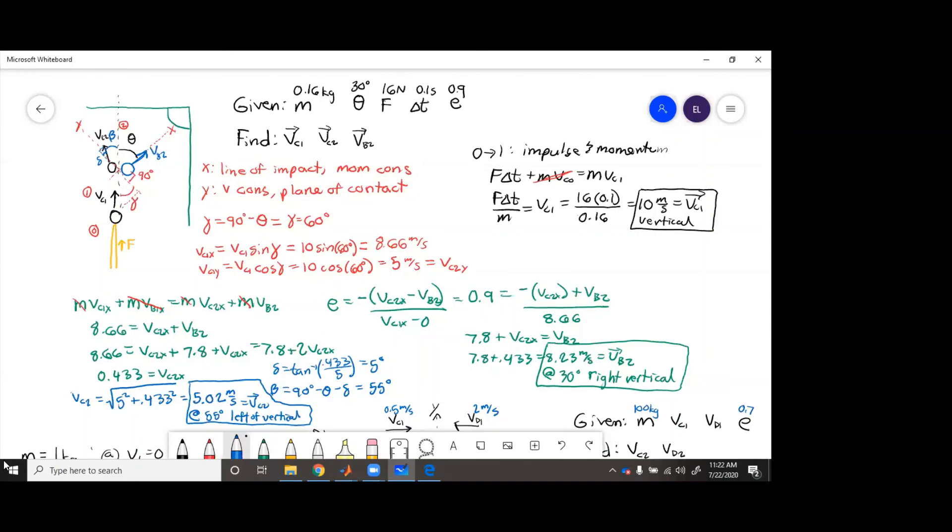So to recap what we did for this problem. Then first, we had the diagram. Second, we assigned line of impact and plane of contact. Now we knew to put line of impact along the direction that vb2 goes, because that is the direction of the force. Force is mass times acceleration, vb2 accelerates towards the pocket, then that's the direction of force, that's the line of impact.